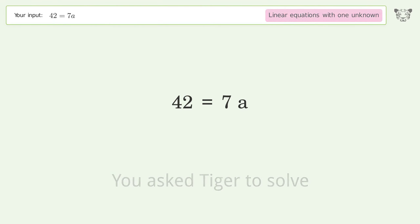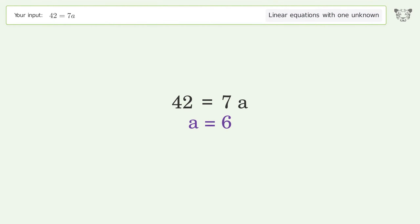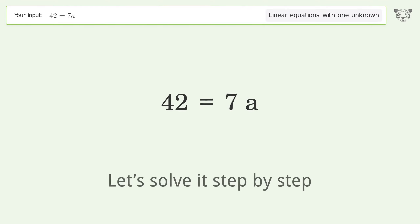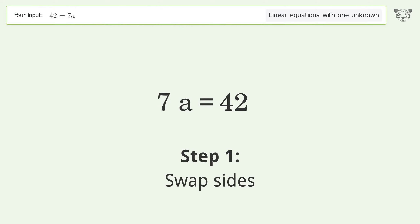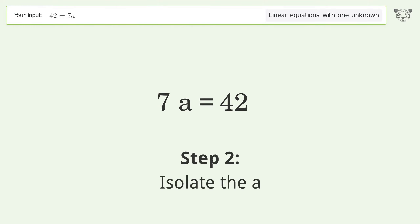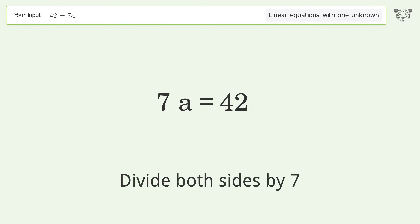You asked Tiger to solve this, which deals with linear equations with one unknown. The final result is a equals 6. Let's solve it step by step — swap sides.